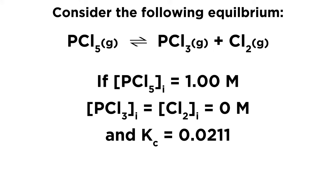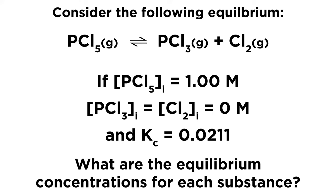We're just starting with PCl5 and letting it begin to equilibrate, and we know that the equilibrium constant for this system is 0.0211. What will be the equilibrium concentrations for each of these three substances?